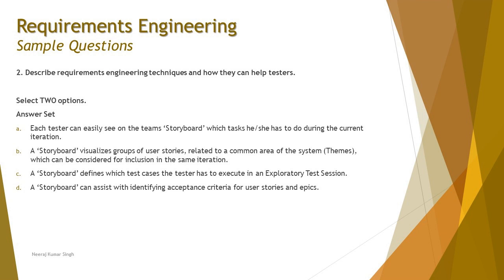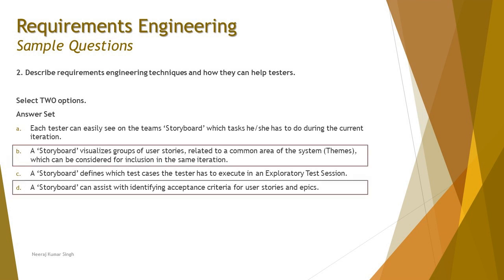Option B states: 'A storyboard visualizes a group of user stories related to a common area of the system, which can be considered for inclusion in the same iteration.' This is the most valid point about a storyboard and how it is applied in agile methodology. Option C states: 'A storyboard defines which test cases the tester has to execute in exploratory test sessions.' However, a storyboard can assist with identifying acceptance criteria for user stories and epics, making C also relevant for helping testers. The right answer is B and C.